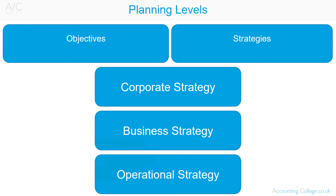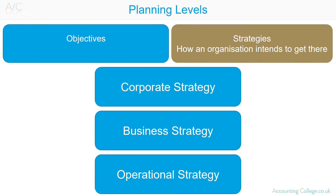Objectives is where an organisation wants to be, and strategies is how an organisation intends to get there. There are three levels to strategy: corporate, business and operational. Corporate strategy is concerned with the whole of the organisation. Business strategy is how to approach a particular market. An operational strategy is strategy that is specific to each department.